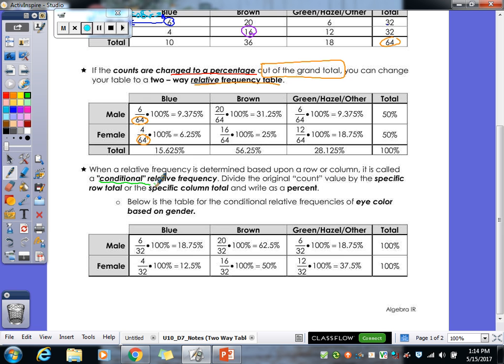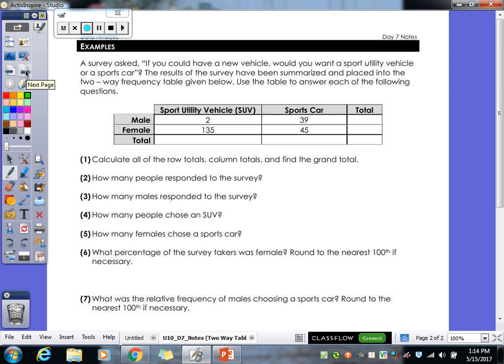So let's take a look at our examples on the back. I find it's easier when you actually have an example to answer. We have a survey asked if you could have a new vehicle, would you want a sport utility vehicle or a sports car? The results of the survey have been summarized and placed into the two-way frequency table given below. Use the table to answer each of the following questions. First thing, number one tells us to calculate all the row totals, column totals, and find the grand total.